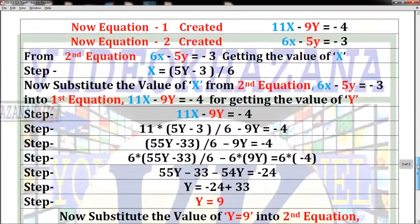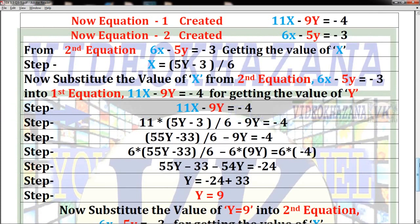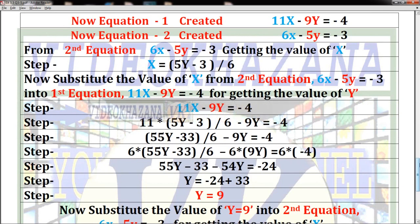From the second equation 6x - 5y = -3, we are getting the value of x. Now substitute the value of x from the second equation.